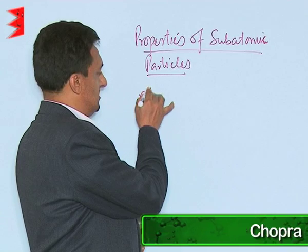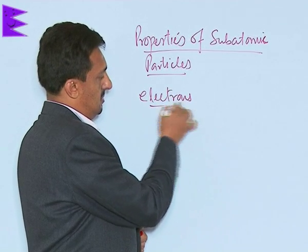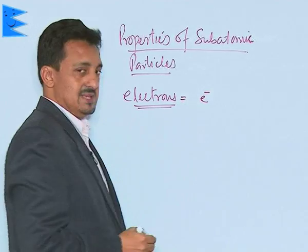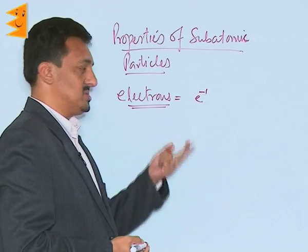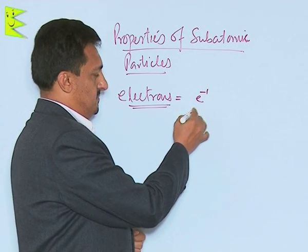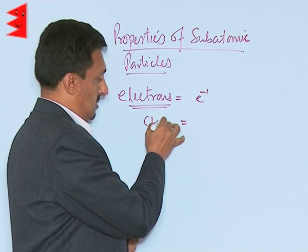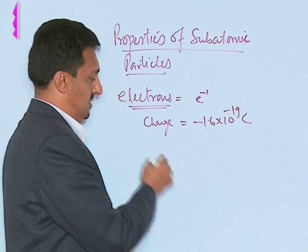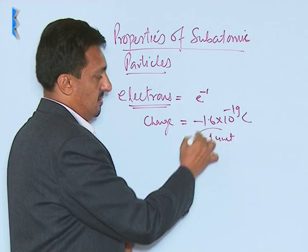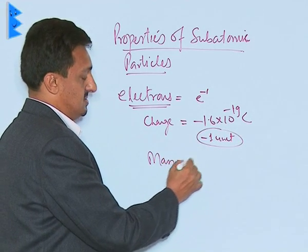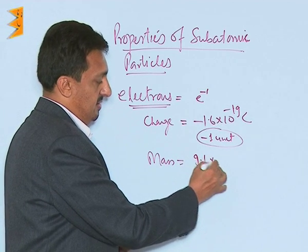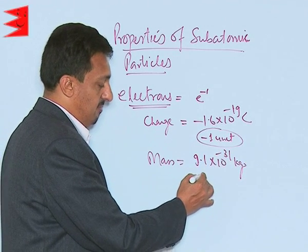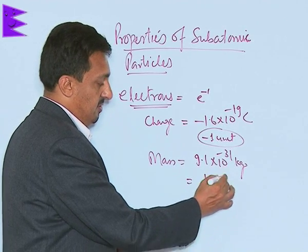Electrons are given the symbol E, usually written as E⁻ or minus 1, because the charge is minus 1. They carry a charge of minus 1.6 × 10⁻¹⁹ coulombs, which is also called minus 1 unit. Their mass is very small — 9.1 × 10⁻³¹ kg, or in terms of AMU (unified mass units), it is 1/1837 unified mass.